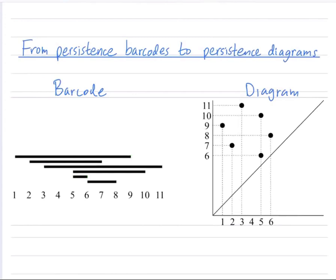So let me show you how to take this persistence barcode and turn it into a diagram. All you do is you take each bar and you turn that bar into a point in the plane. So this red bar on top, it was born at scale one and it dies at scale nine.